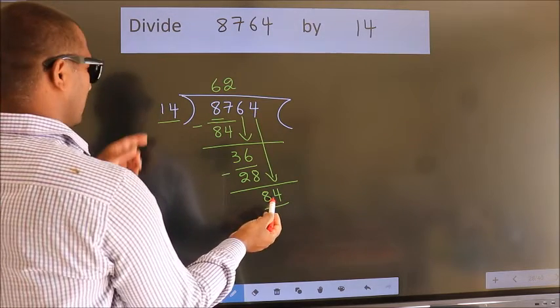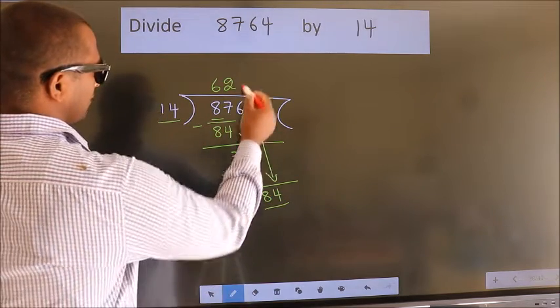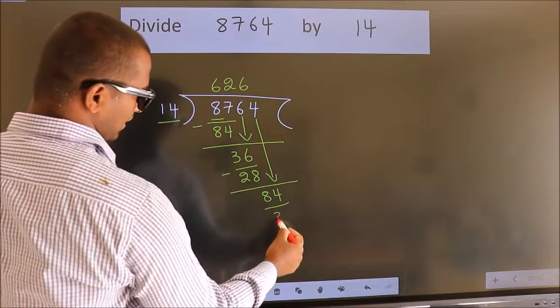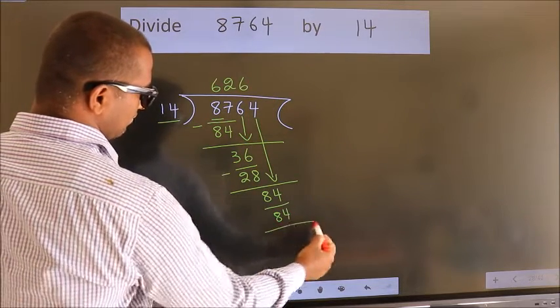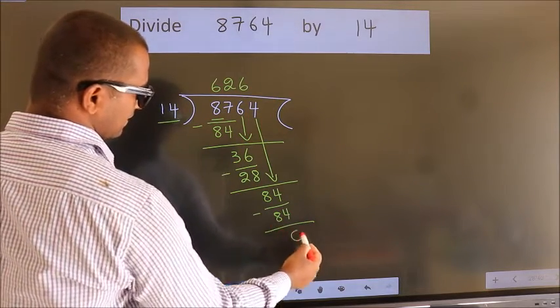When do we get 84 in the 14 table? 14 times 6 is 84. Now we subtract. We get 0.